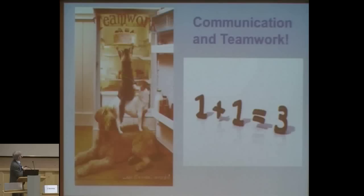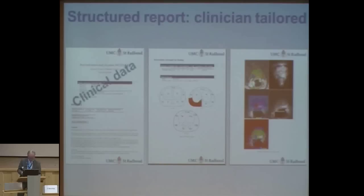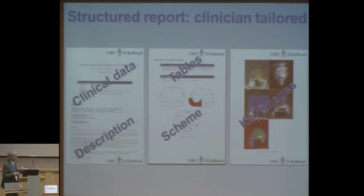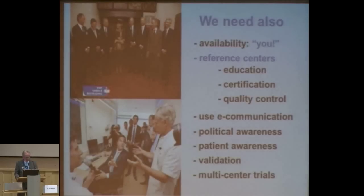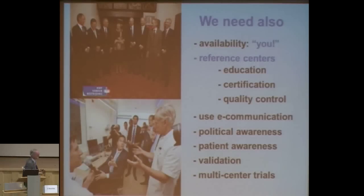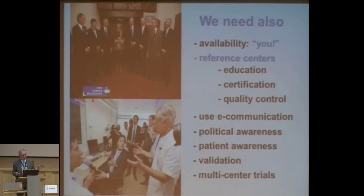We need a structured report and to communicate in the way you like it. Our urologists said those key images are nice, but we don't understand them — please give us schemes, tables, descriptions, and also clinical data. This is very powerful for research too. We also need availability — I don't have enough MRI machines. As referring physicians, fight your orthopedic surgeons. Why make MRI images of knees, ankles, and wrists when it doesn't save lives? We need MRI to save prostate cancer patients' lives. Push together with the radiologist.